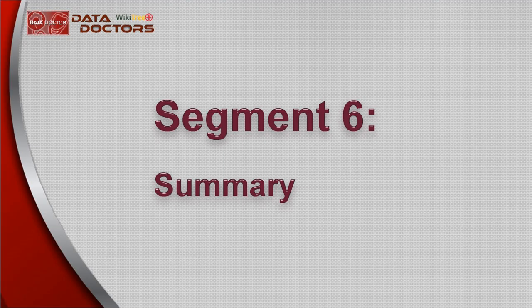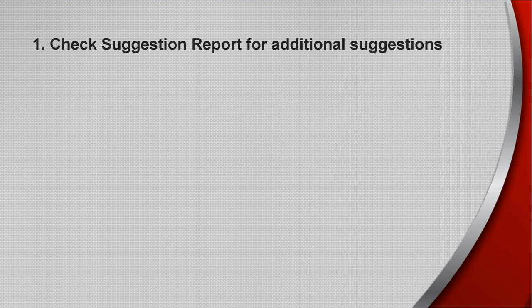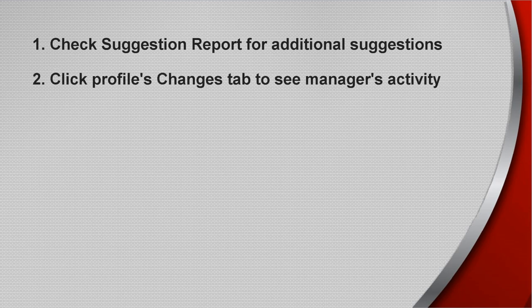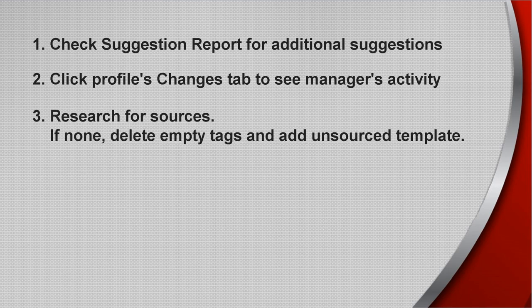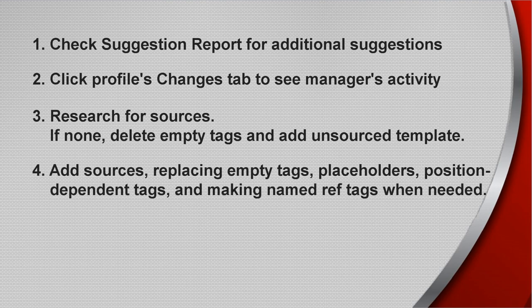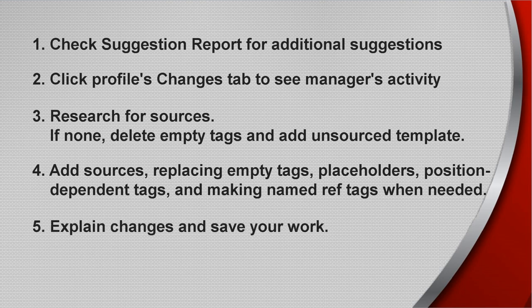After identifying the profile you want to work with, check its suggestion report for additional suggestions. Return to the profile and click the Changes tab to see how active the profile manager is. Search for sources. If none are found, delete the incorrect inline citations and leave an unsourced template. Add sources you find by filling empty inline citations and replacing placeholders and position-dependent tags. Also, create named inline citations as needed. Explain changes, save your work, and check the public view to make sure it looks right. Return to the suggestions report and update the status.